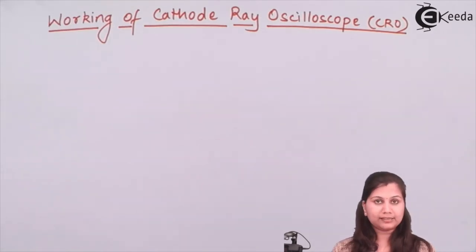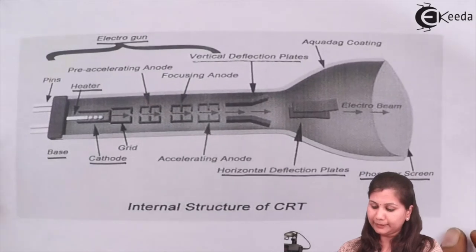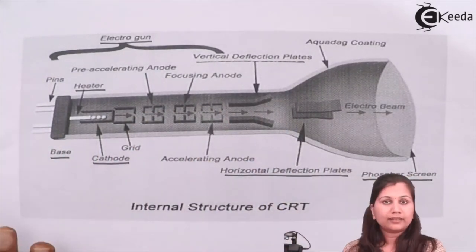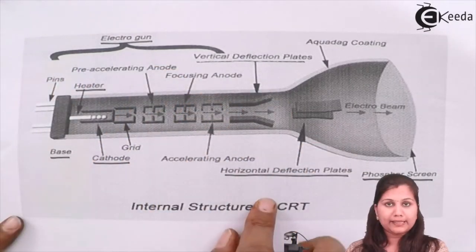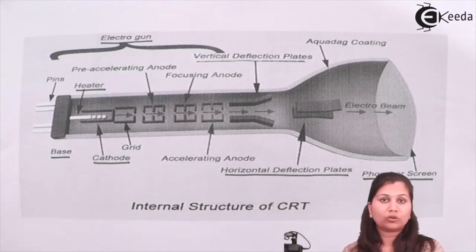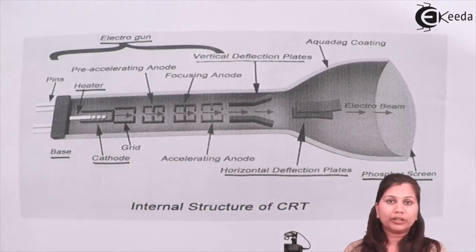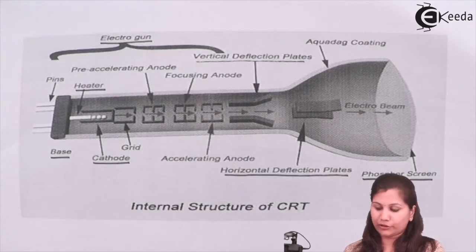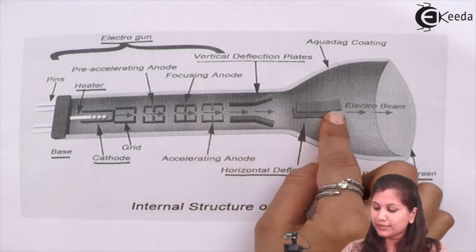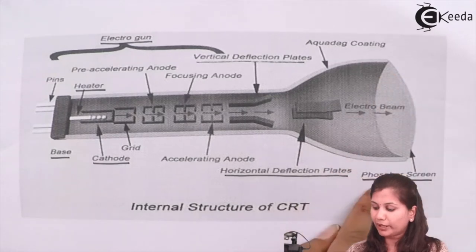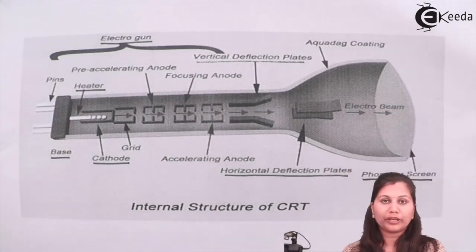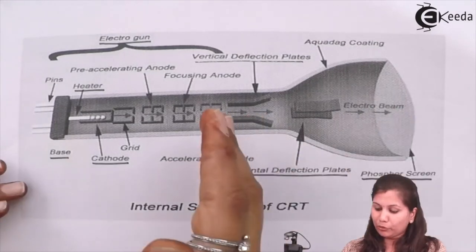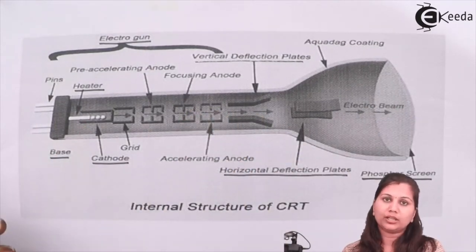This luminous spot moves over the screen in proportion to the variations in the input voltage. In the cathode ray tube we have the electron gun, the vertical and horizontal deflection plates which cause the movement of the electron beam in the vertical and horizontal direction. After passing through these two plates, the electron beam strikes the phosphor screen and luminescence is produced — a spot is produced — and this spot moves in proportion to the signal applied to the CRO.